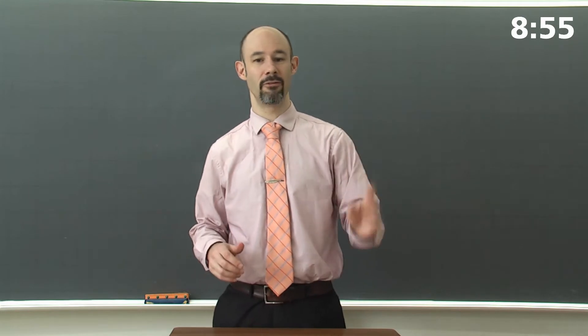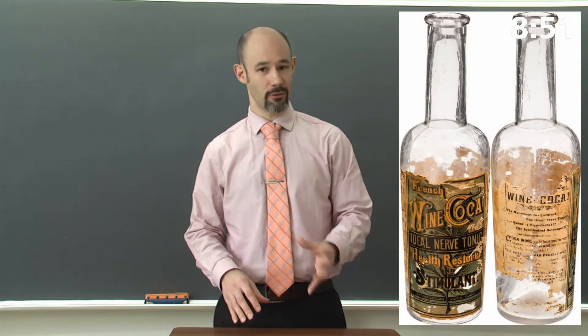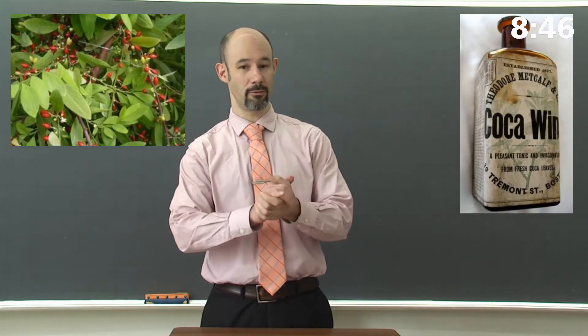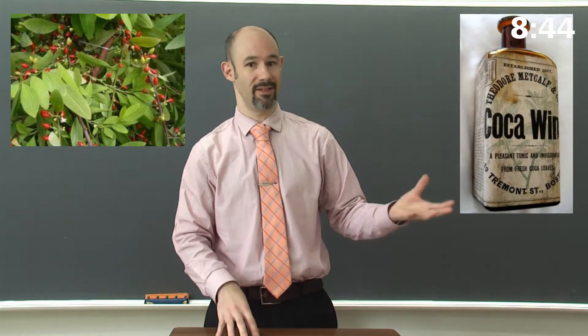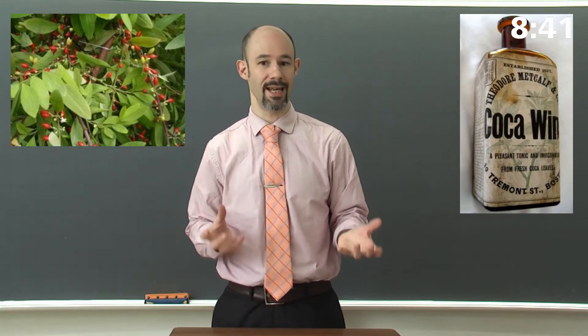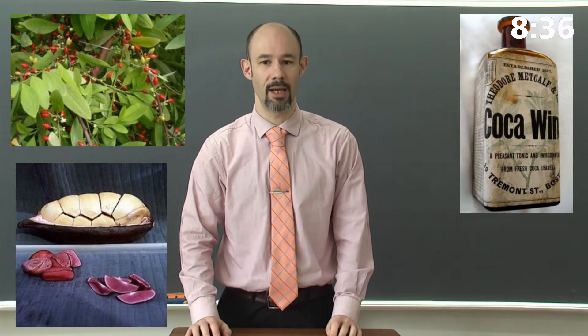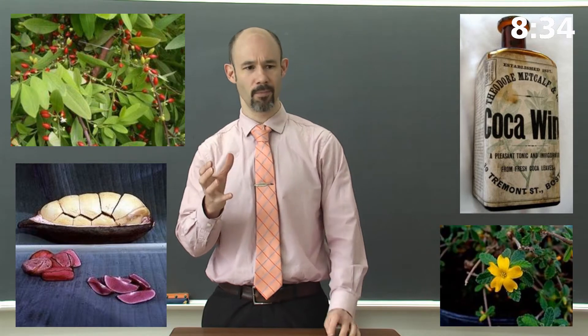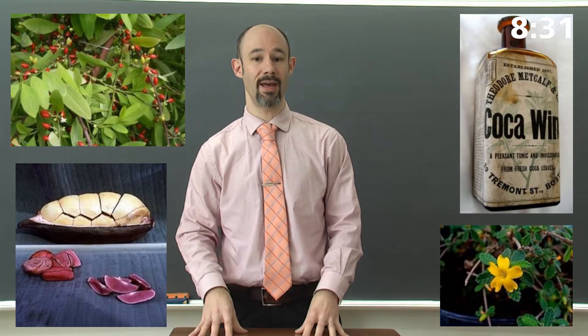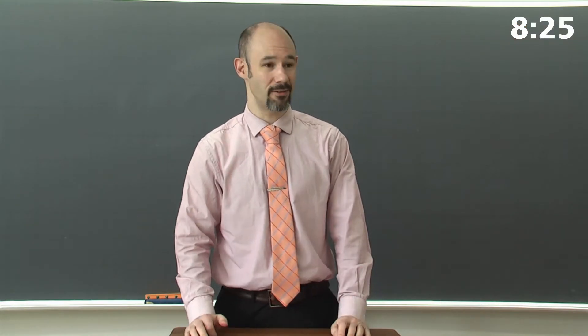He came up with Pemberton's French wine cola. In that drink, he had coca and coca wine—coca is where we get cocaine from, an addictive substance. Coca wine is basically alcohol with cocaine in it. He had a cola nut, which has caffeine, and a plant called Damiana, which has a bitter taste. He mixed all the ingredients together, made his Pemberton's French wine cola, and started selling it. It was moderately successful.